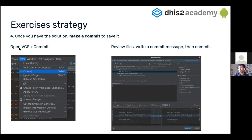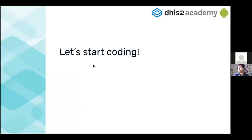To commit, click on the VCS menu at the top, click on 'Commit', and then you will see the files that you have changed. Give a commit message and save it, and you're done. All right, so enough explanations — we can start coding.